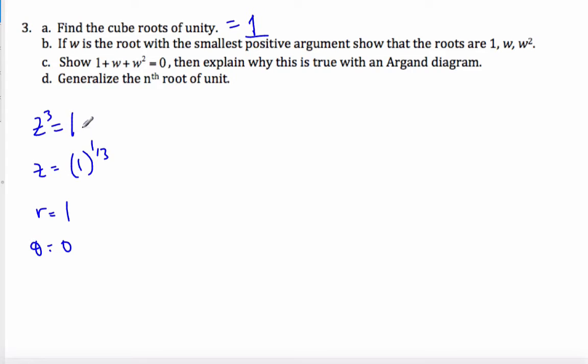If you just think about this is 1 plus 0i, which is on the x-axis, angle is 0. And so zk is equal to cis 0 plus 2πk. And I'm going to do this to the 1 third, because it's cube.